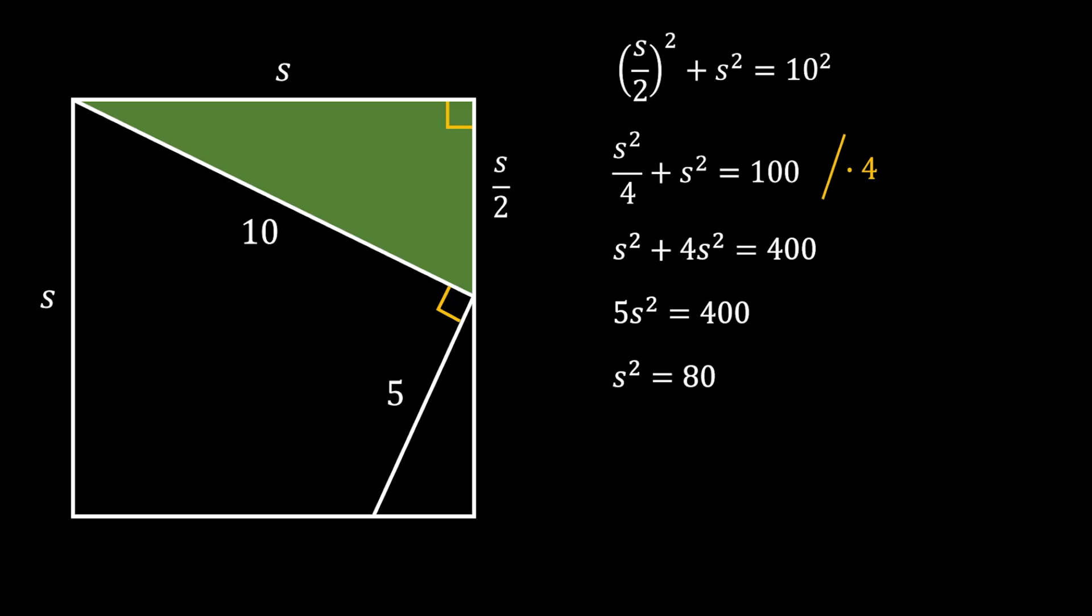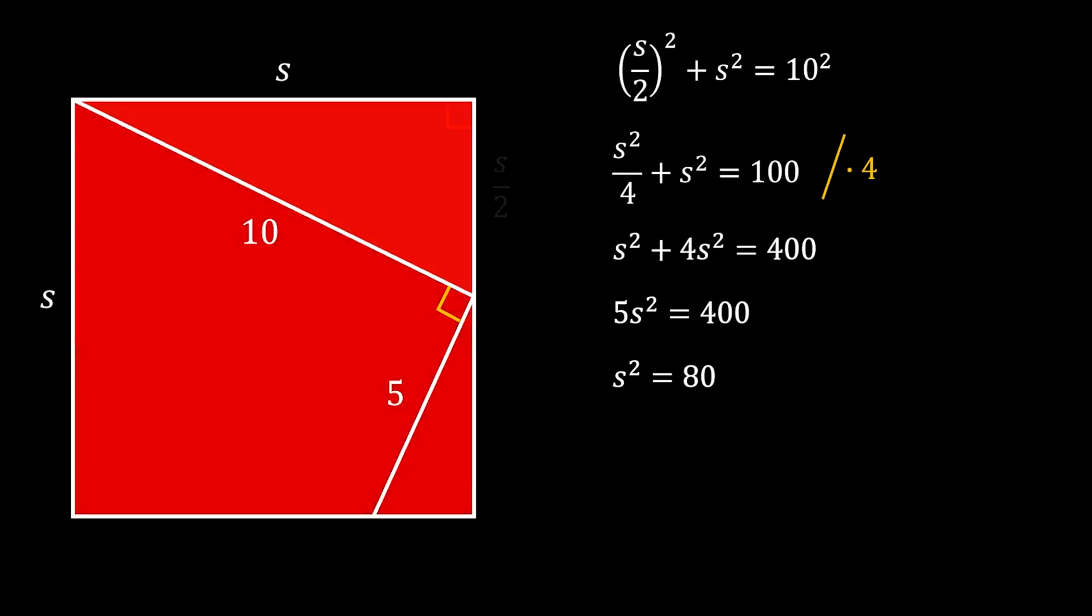But remember we want to find the area of the red square. And since the side of this square is equal to S, this means that the area of the red square is equal to S squared.